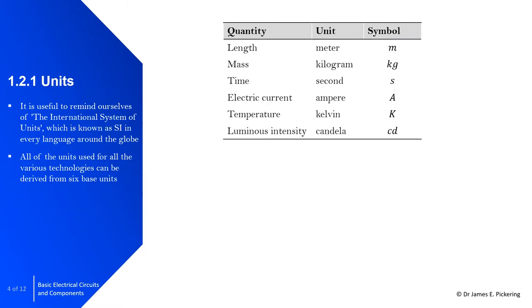Units are important. It's important to remind ourselves of the international system of units, known as SI units, which is a language known all around the world. In this table we have quantity, unit, and symbol. These include length (metre, m), mass (kilogram, kg), time (second, s), electrical current (ampere, A), and temperature (kelvin, K). All units for various technologies can be derived from these six base units.